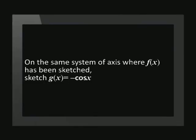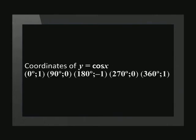Let's try another question using the same method. On the same system of axes, where f of x has been sketched, sketch g of x is equal to negative cos x. We start by listing the coordinates of the standard graph. In this function, the value of a is negative 1, which means we need to multiply all the y values by negative 1.